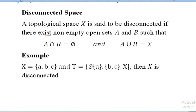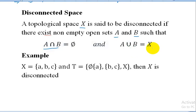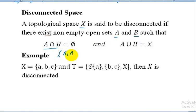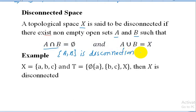The next definition is disconnected space. A topological space X is said to be disconnected if there exist non-empty open sets A and B such that A intersection B equals phi and A union B equals X. If X is a disconnected space and sets A and B form a disconnection of X, then we write that {A, B} is a disconnection of X.